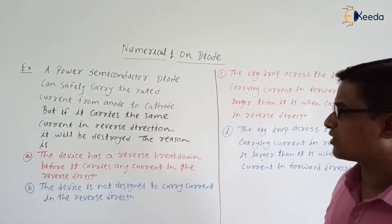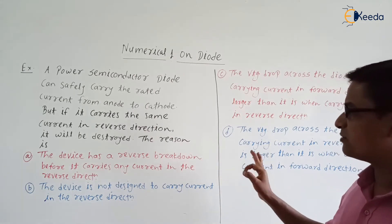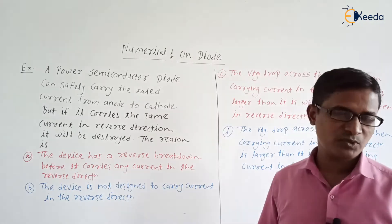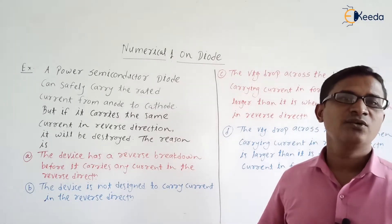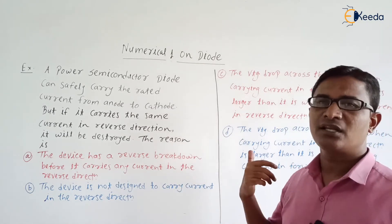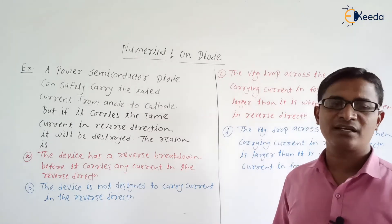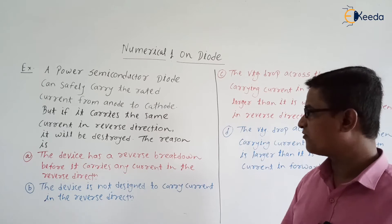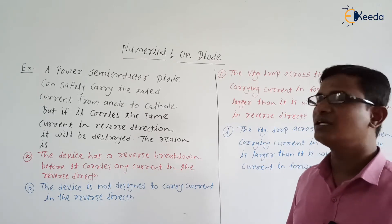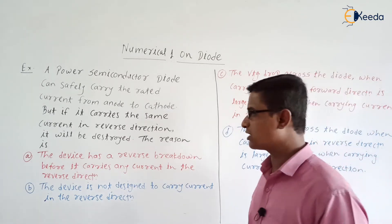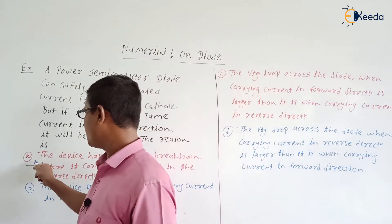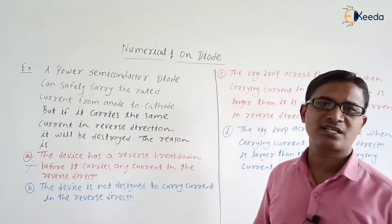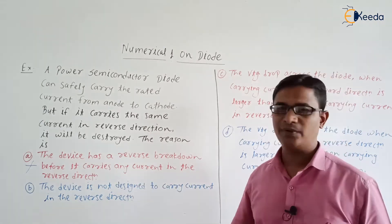In the first option they have given: the device has a reverse breakdown before it carries any current in the reverse direction. Whether this option is correct? No. Because before the reverse breakdown, there is a small leakage current that will be flowing through the device. So this is not the correct answer.